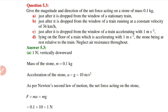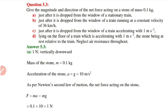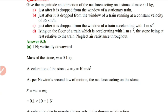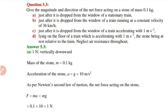Now, Exercise Question 5.3: give the magnitude and direction of the net force acting on a stone of mass 0.1 kilogram in four cases — (i) just after it is dropped from the window of a stationary train; (ii) just after it is dropped from the window of a train running at constant velocity of 36 km/h; (iii) just after it is dropped from a train accelerating at 1 m/s²; (iv) lying on the floor of a train accelerating at 1 m/s², the stone being at rest relative to the train. Neglect air resistance throughout.